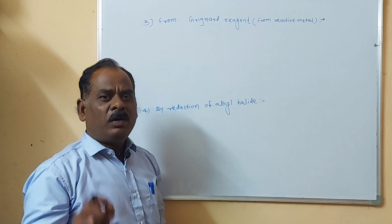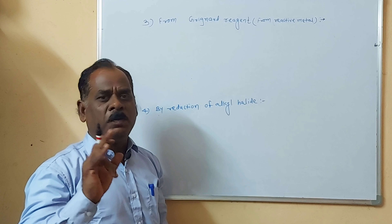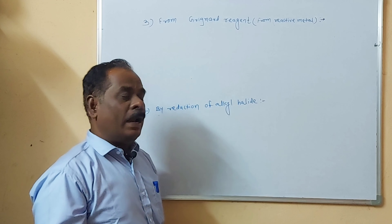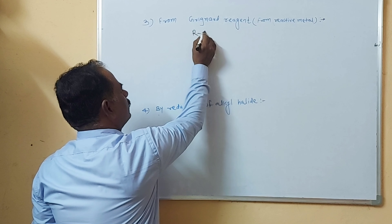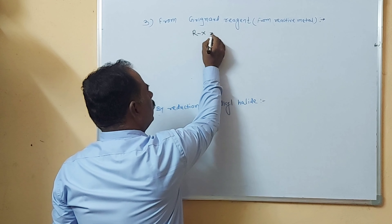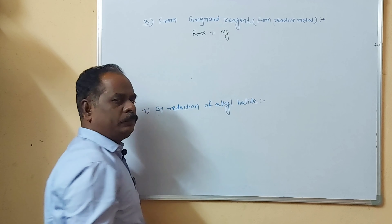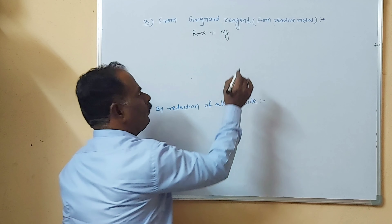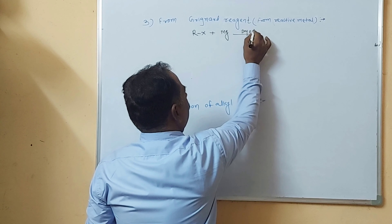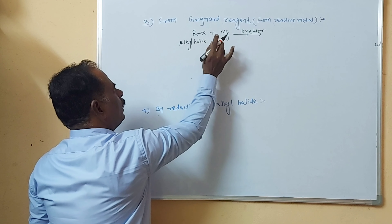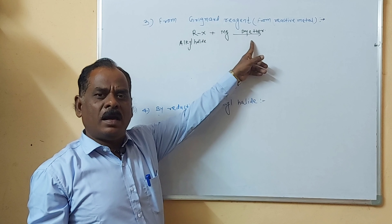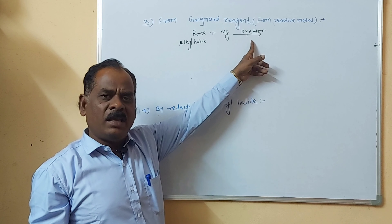Try to understand what is meant by Grignard reagent and how it is prepared — questions asked in examinations. When alkyl halide, general reaction R-X, is heated with a reactive metal like magnesium in presence of dry ether under inert conditions, a reaction takes place.